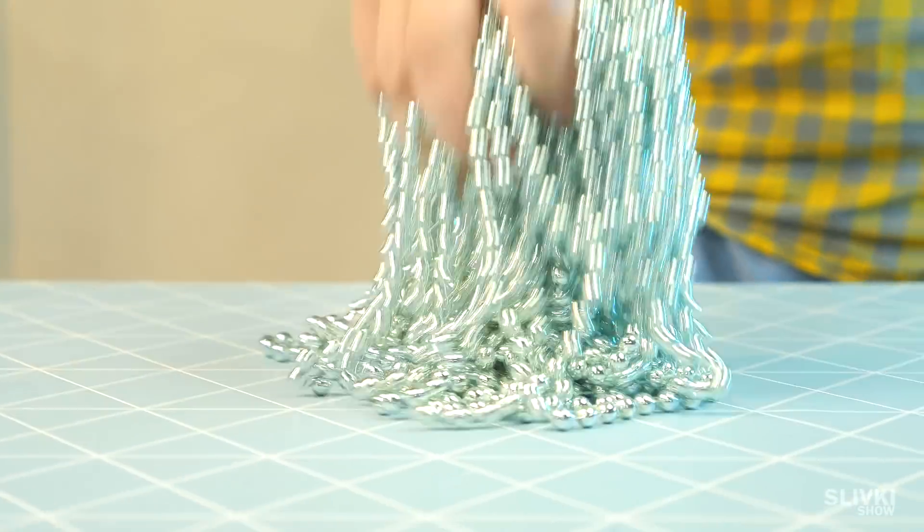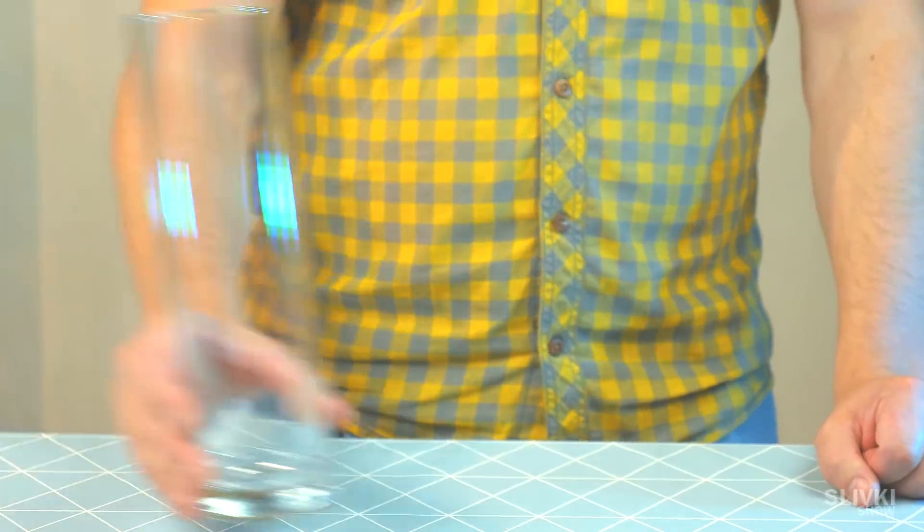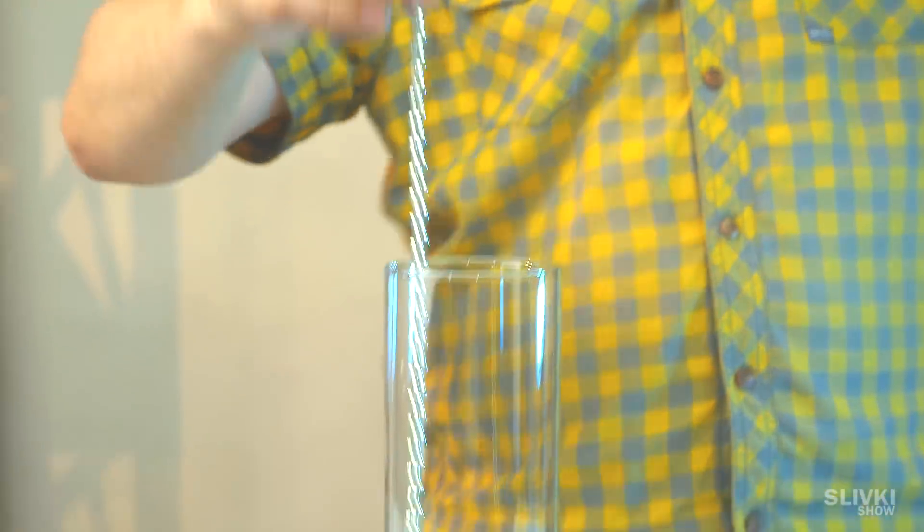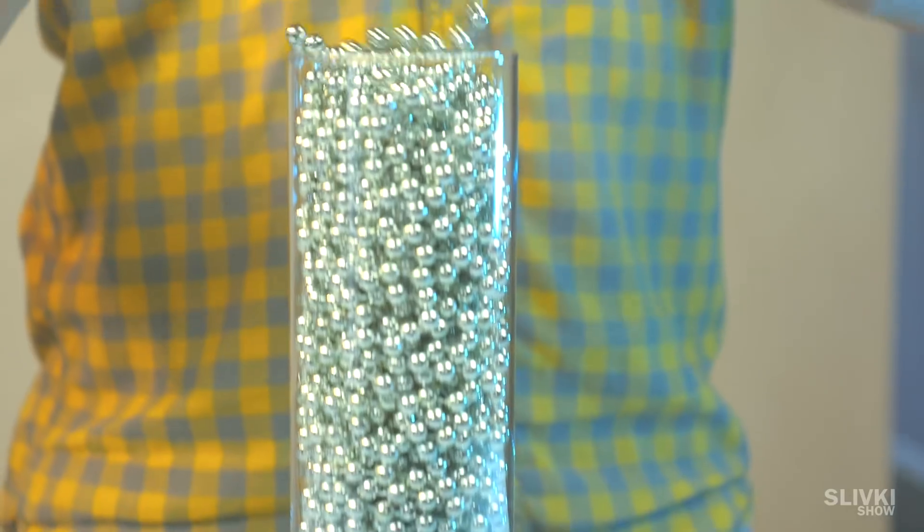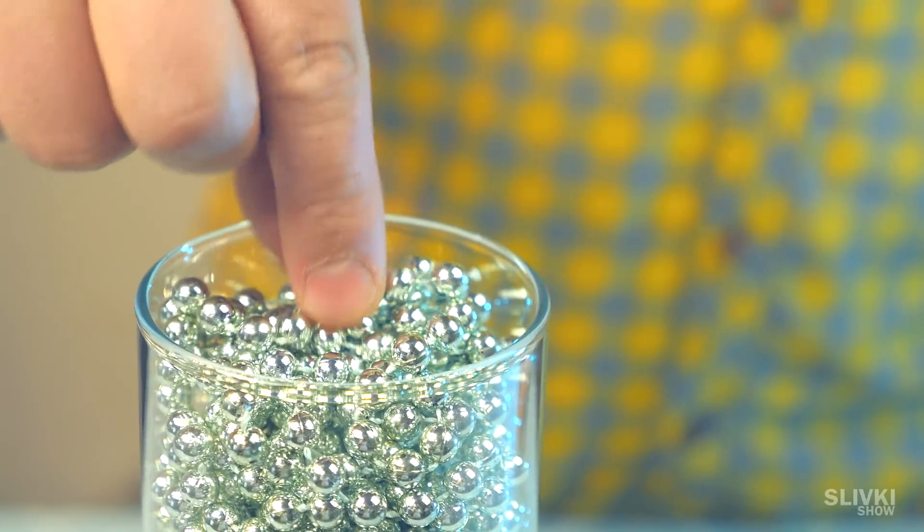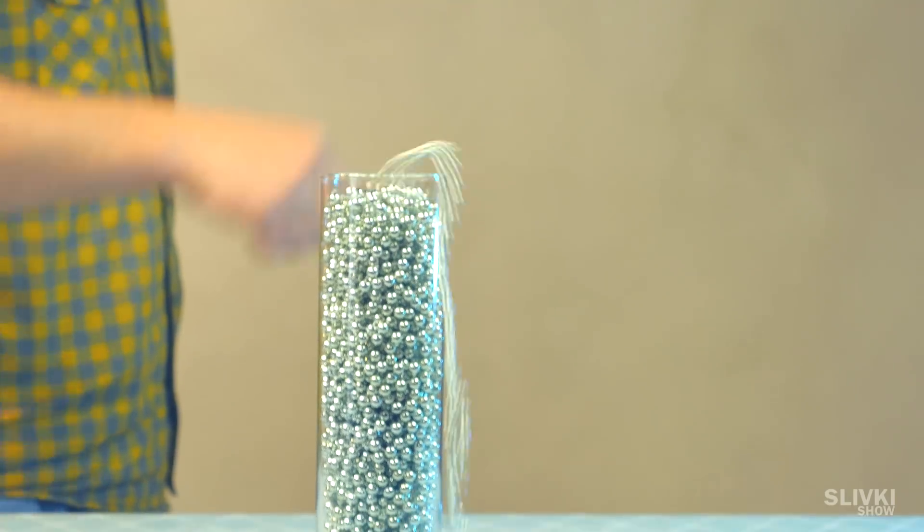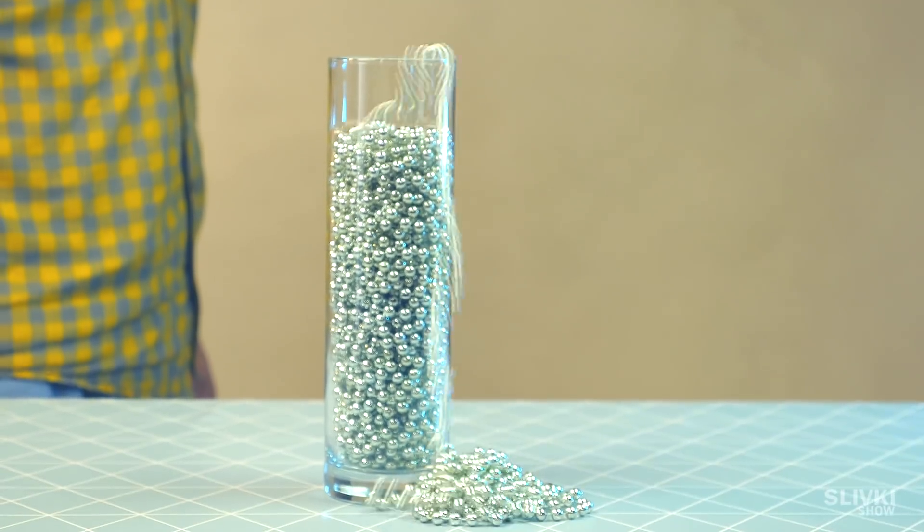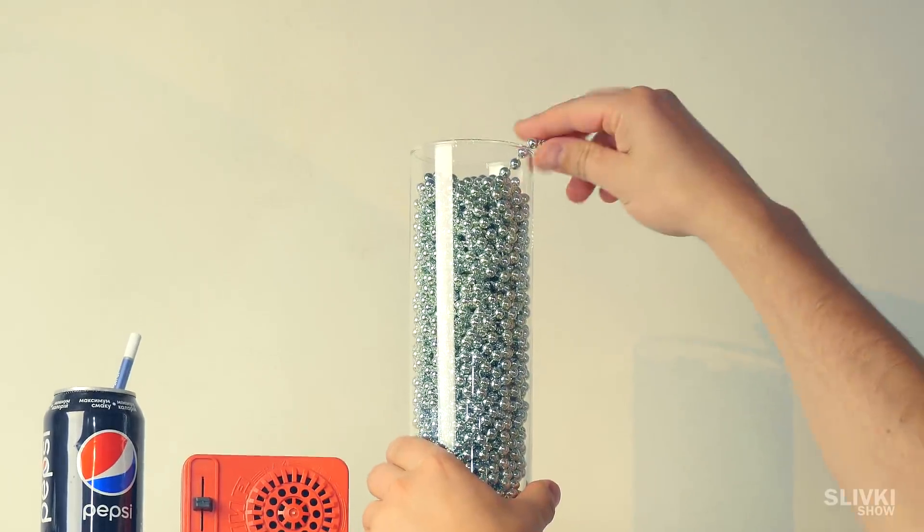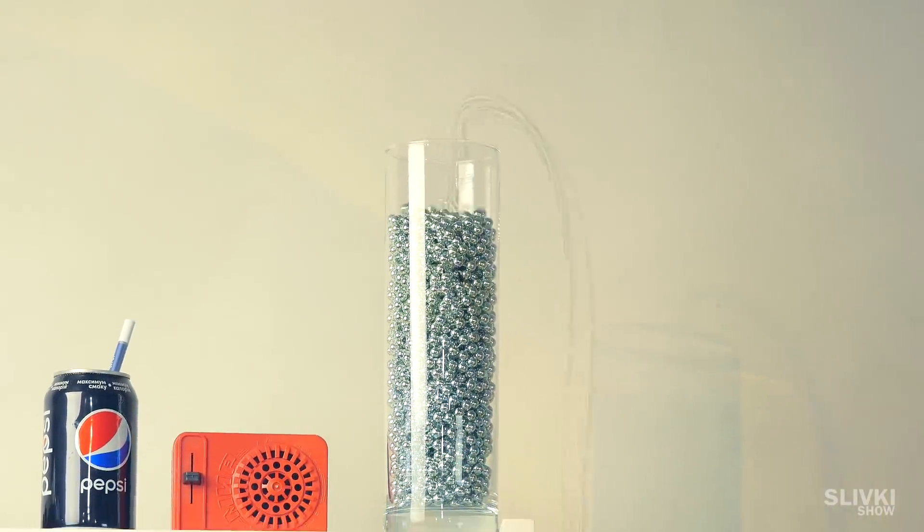Now take these Christmas beads, a tall flower vase and put them inside. If you take the tip from the vase, this chain starts flowing outside. But if you put the vase 2 meters height from the floor, look what happens with it.